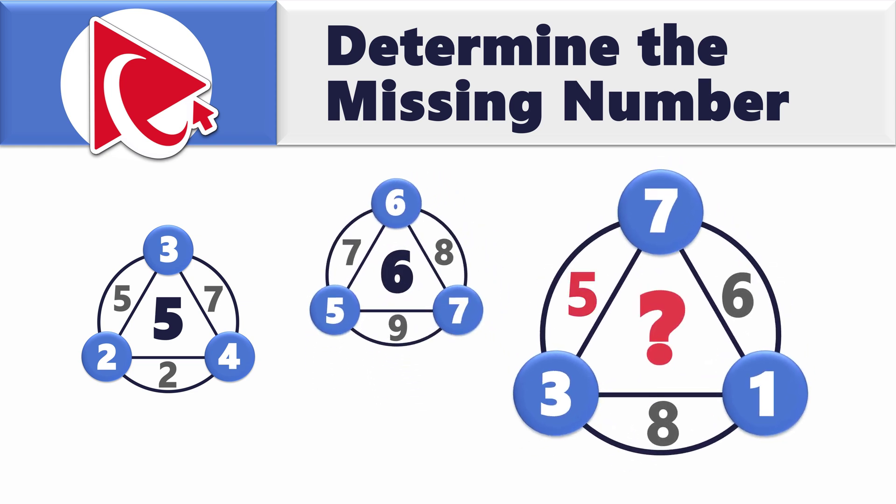In the third shape, the inside numbers are 5, 6, and 8, the outside numbers are 3, 7, and 1, and the middle number is missing, which is something you need to calculate.